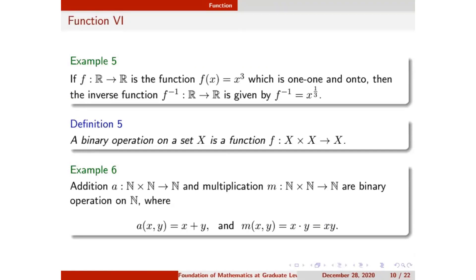If it were a square function, it would not be one-to-one because the square of 1 and minus 1 are both 1. But in the case of the cube function, it is one-to-one because cubes of negative and positive numbers are different. Any two distinct numbers give distinct cubes, so this is a one-to-one function.